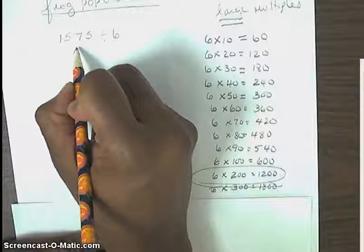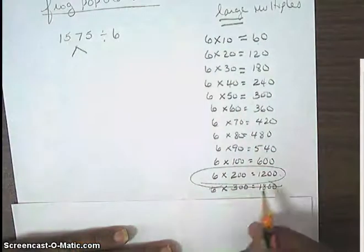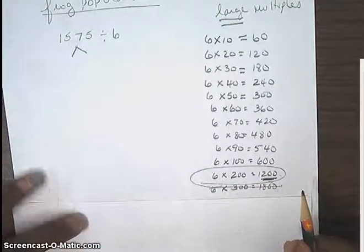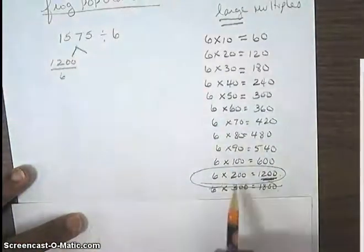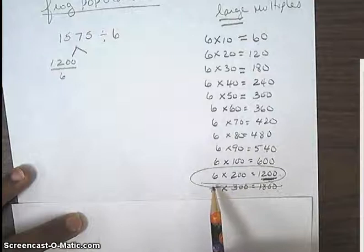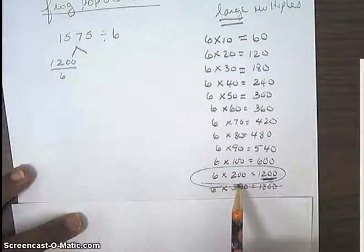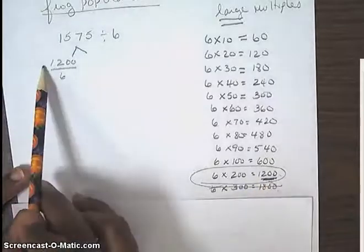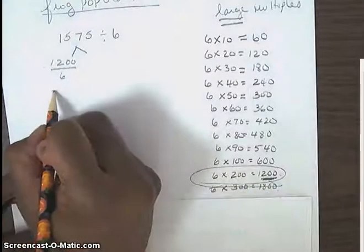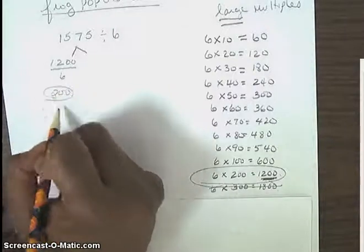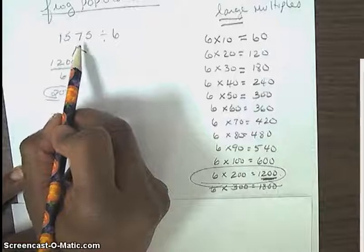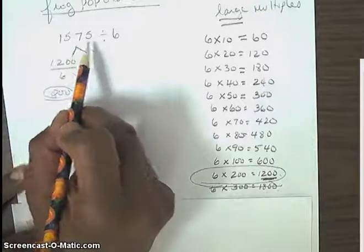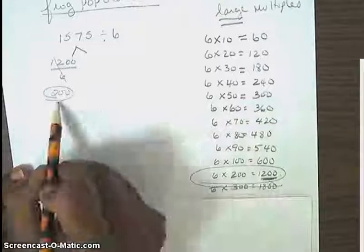So this is what I'm going to do. If I want to break this 1,575 apart, I'm going to use 1,200 or 1,200 and take it apart. And I'm going to divide it by 6. Because division is the opposite of multiplication, I know that because 6 times 200 is equal to 1,200, that means 1,200 divided by 6 is equal to 200. So already I have eliminated 200 pieces from that 1,575. And I have 1,200 pieces from that 1,575.